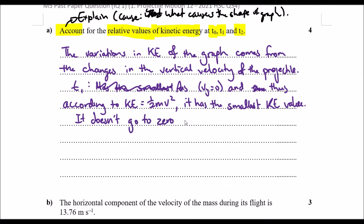The KE at t1 doesn't go to zero because we know that vx is greater than zero, which still contributes to kinetic energy. That answers the shape at t1. Now let's talk about t2 and t0.